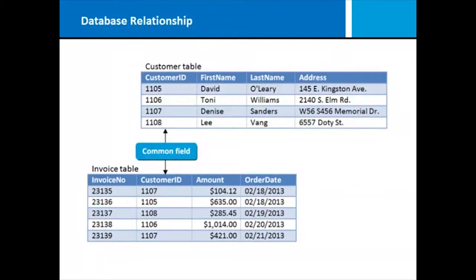A list is just a list. In order to make it a database, we want to do more than just sort it — we want to be able to query it and attach it to other lists. In this particular case, we're looking at a customer table, which includes the customer ID and all of their contact information. We have customers because we're selling something, which means we have orders. So now we have an invoice table, which tells us an invoice number, which customer the invoice went to, how much it was, and the order date.